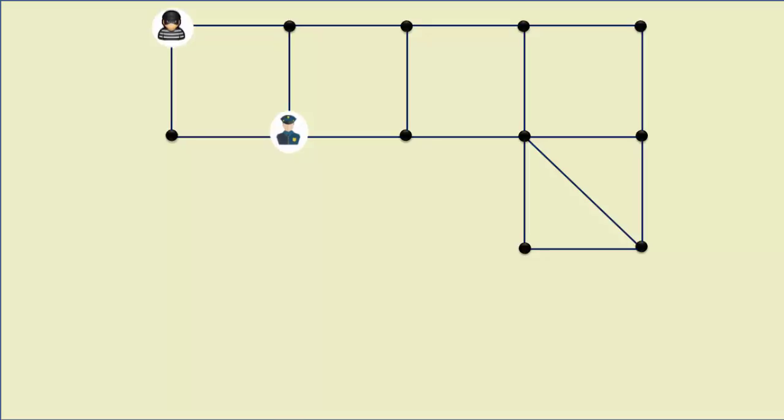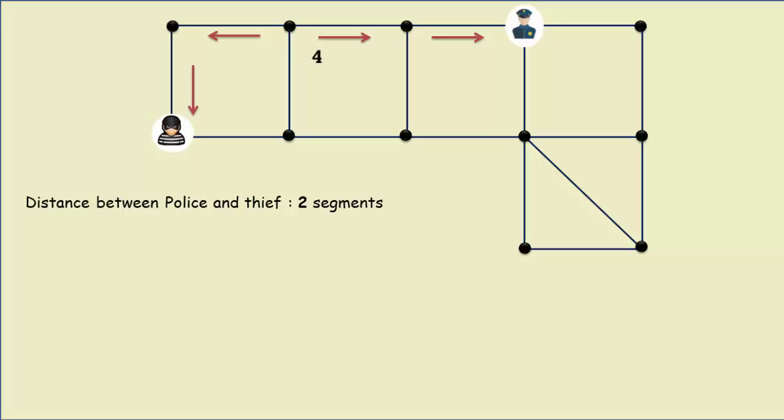The thief is located two segments away from the police. But in one move, the police can cover only one segment. And that's why the thief has an opportunity to move away from the police to maintain a distance of a non-zero even number such as 2, 4, etc.